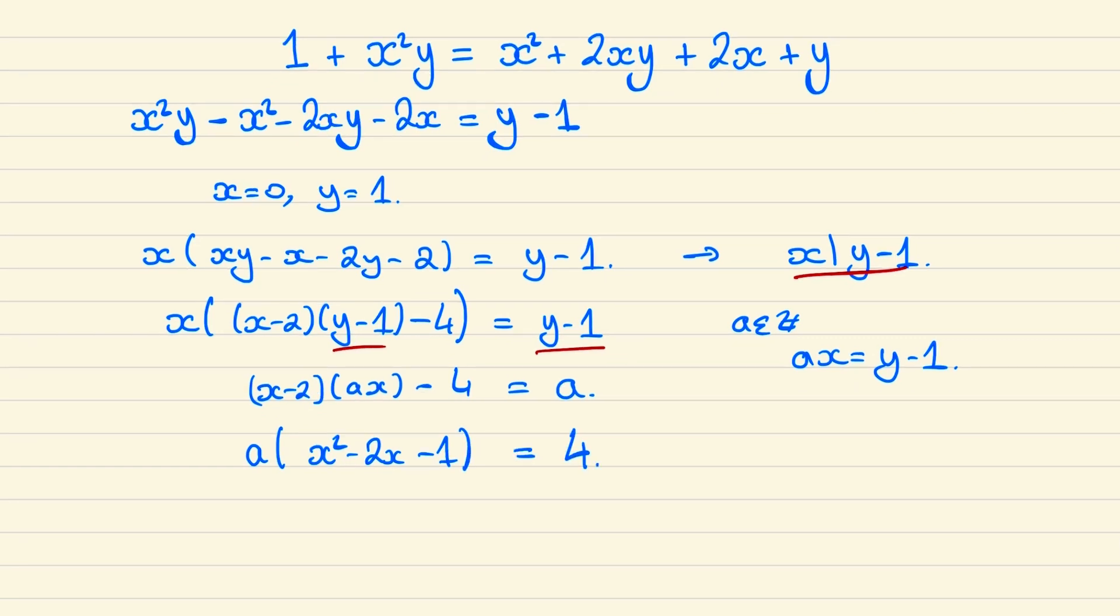And so we have six possibilities to check. We could have a could be plus or minus 4 and the quadratic in x could be plus or minus 1, or this could be plus or minus 2 and plus or minus 2, or plus or minus 1 and plus or minus 4.